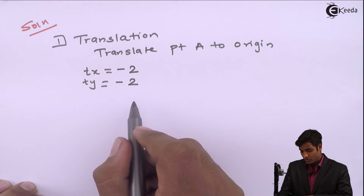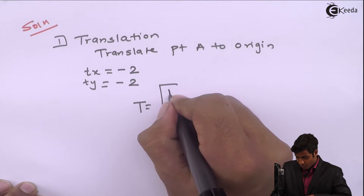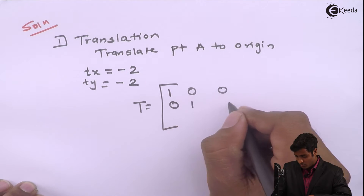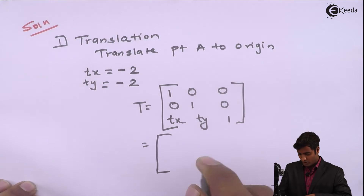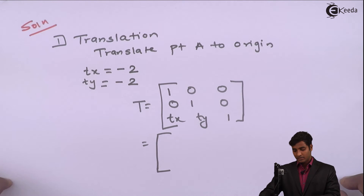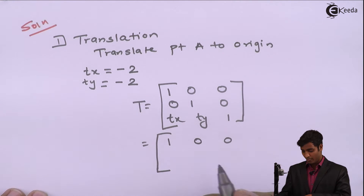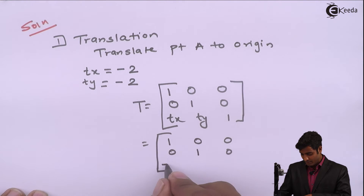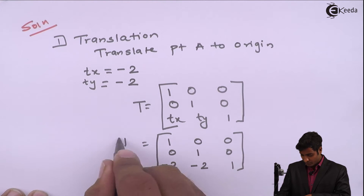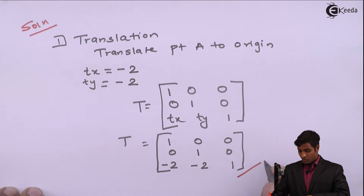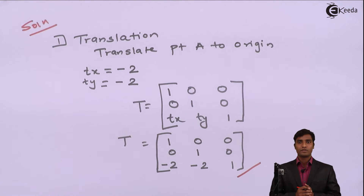The standard matrix for translation is: [1, 0, 0 / 0, 1, 0 / tx, ty, 1]. I will replace the values of tx and ty to get the translation matrix. The value of tx is minus 2 and ty is minus 2, so the translation matrix becomes [1, 0, 0 / 0, 1, 0 / -2, -2, 1]. This is the first translation transformation.